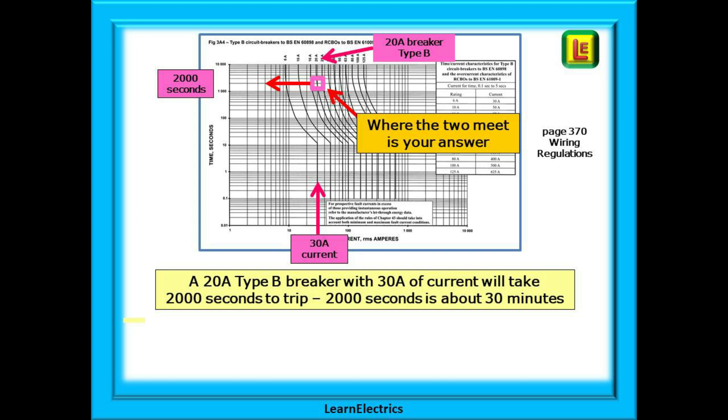Trace this crossing point to the left and read off the number of seconds it takes to trip. In this case it is 2,000 seconds, just over 30 minutes.